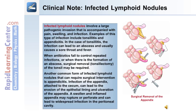A clinical note on infected lymphoid nodules: infected lymphoid nodules involve a large pathogenic invasion accompanied by pain, swelling, and infection. Examples include tonsillitis and appendicitis. In tonsillitis, the infection can lead to an abscess and typically causes sore throat and fever. When antibiotics fail to control repeat infections or when an abscess forms, surgical removal — tonsillectomy — may be required. In appendicitis, infection of the appendix attached to the cecum can lead to erosion of the epithelial lining and ulceration. A swollen, inflamed appendix may rupture or perforate, causing widespread infection in the peritoneal cavity.